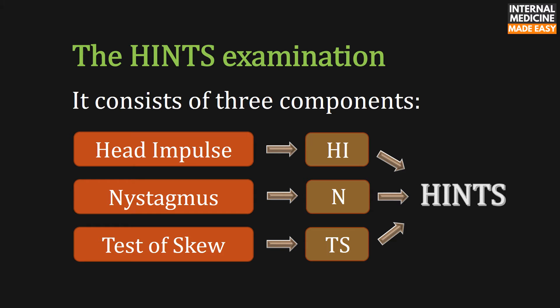The HINTS examination consists of three components: head impulse, nystagmus, and test of skew. The acronym HI indicates head impulse, N indicates nystagmus, and TS indicates test of skew.